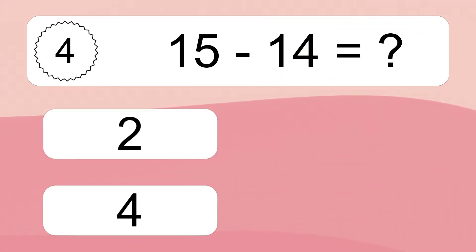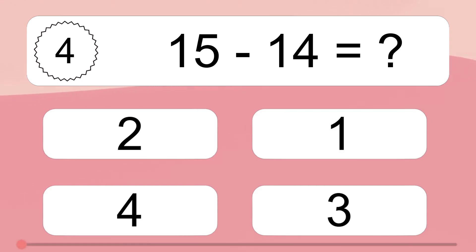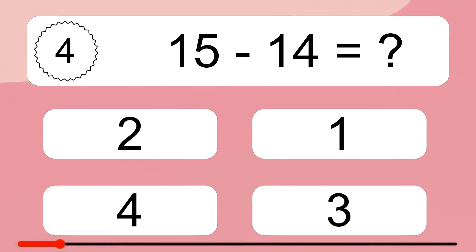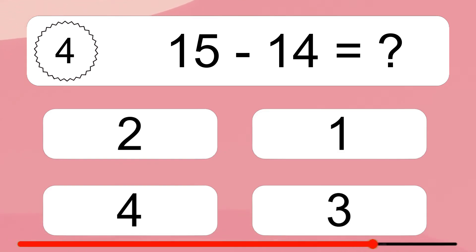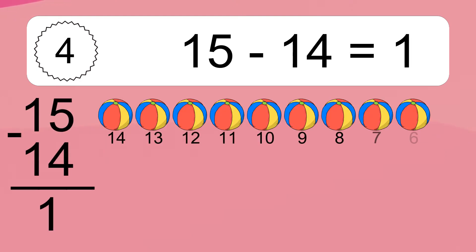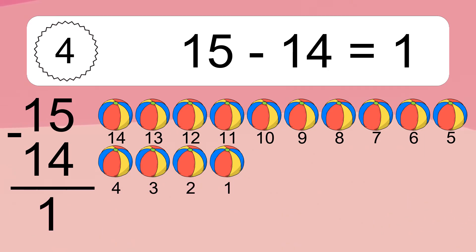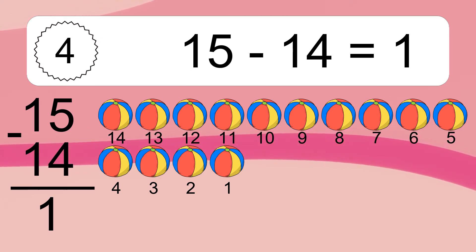15 minus 14 equals what? 15 minus 14 equals 1. Let's count it: 14, 13, 12, 11, 10, 9, 8, 7, 6, 5, 4, 3, 2, 1.